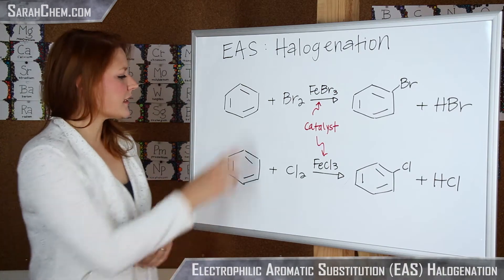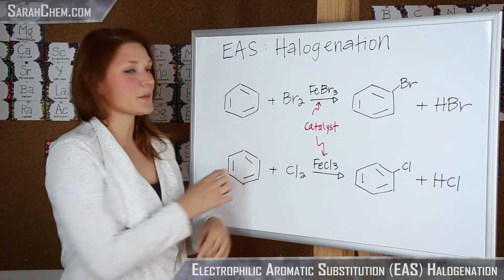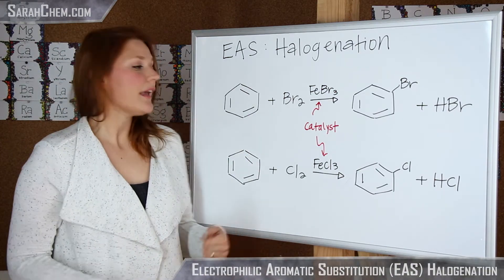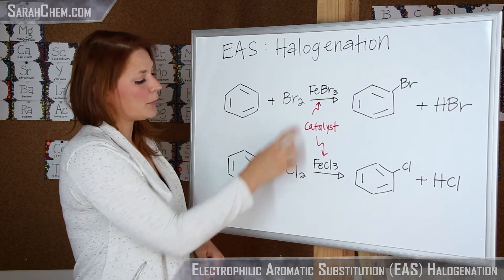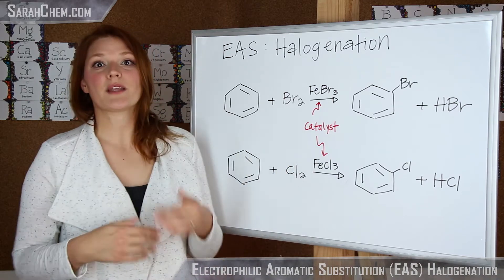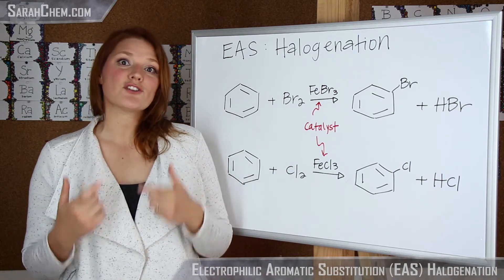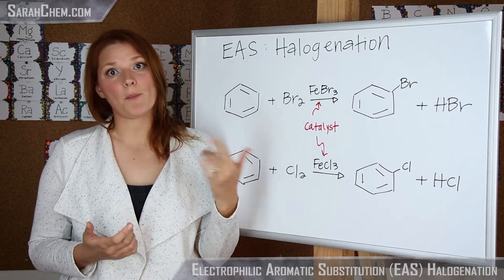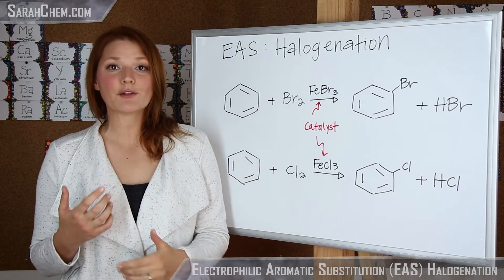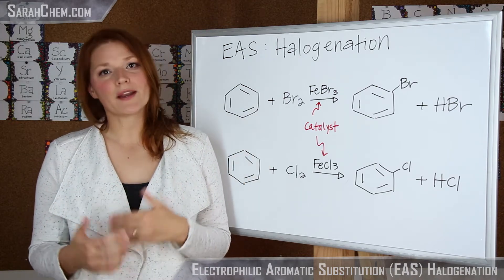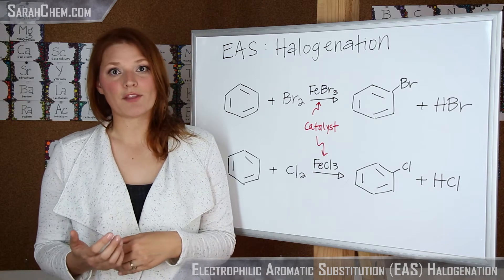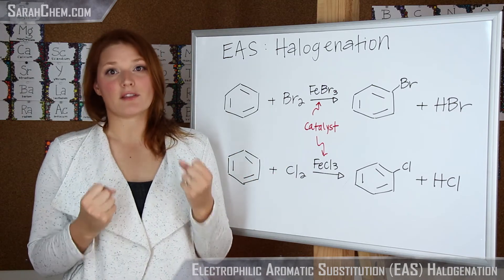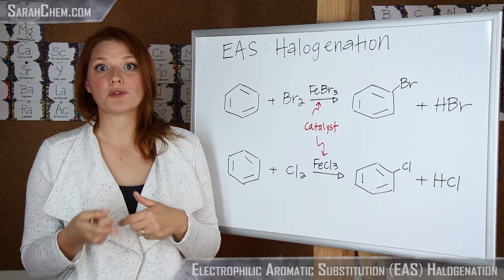So if we take a look here, we'll see that in both cases we have our aromatic compound, which is going to be benzene, and then we have our substance here — bromine or chlorine — to react with it. Now the big thing to note is that benzene, being an aromatic compound, is particularly stable, so it's not very readily reacted with. These here are not actually strong enough electrophiles to get this reaction rolling.